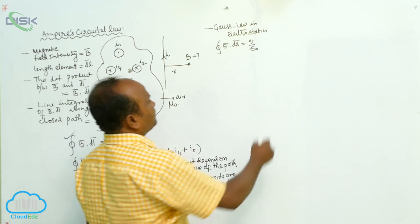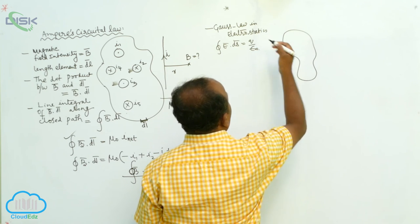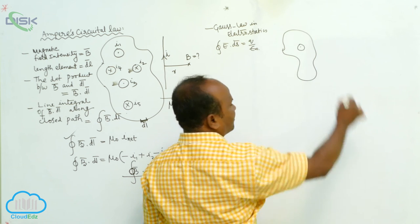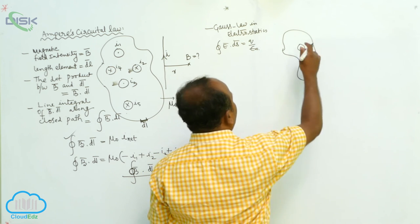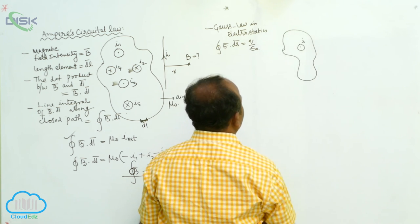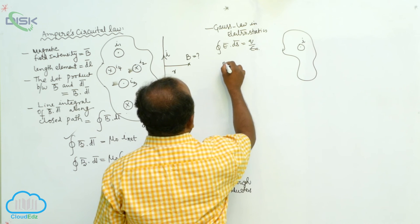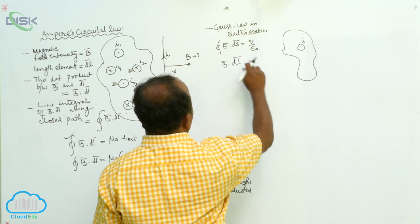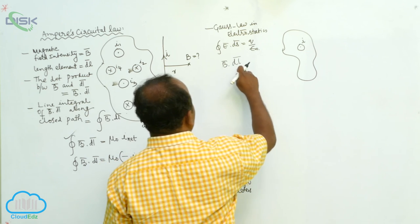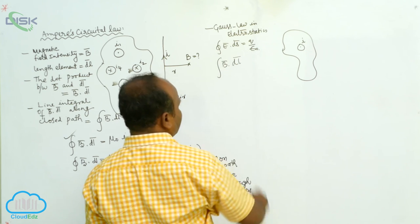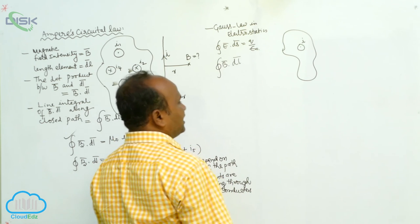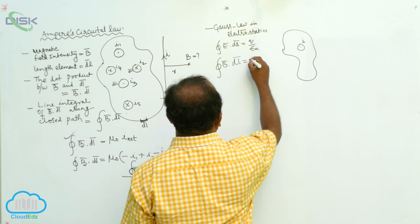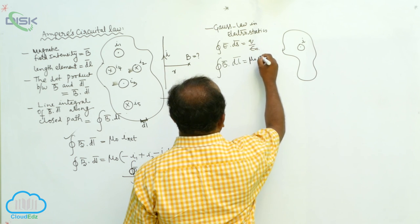Suppose there is a closed path with only one current I present. Here B is the magnetic field induction and dl is the length element. The line integral of B dot dl over a closed surface equals mu-naught times I.